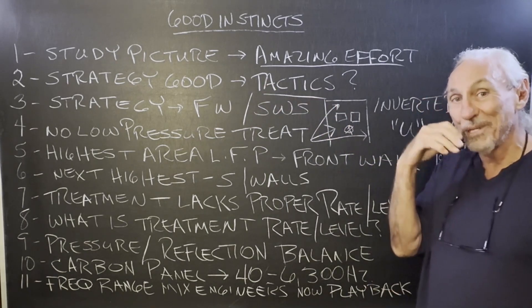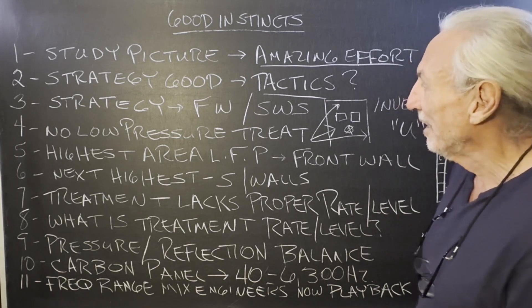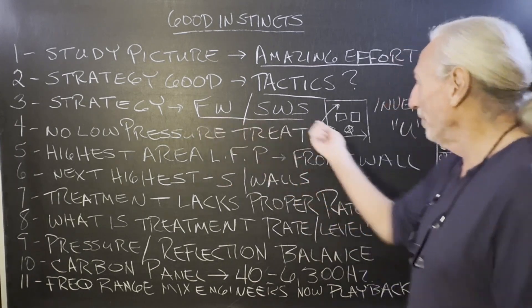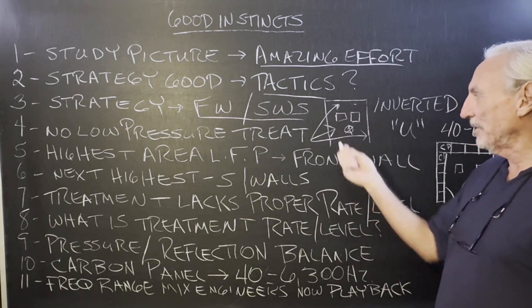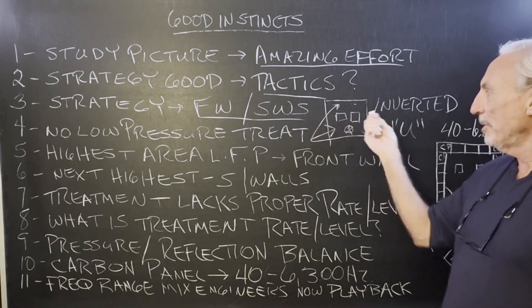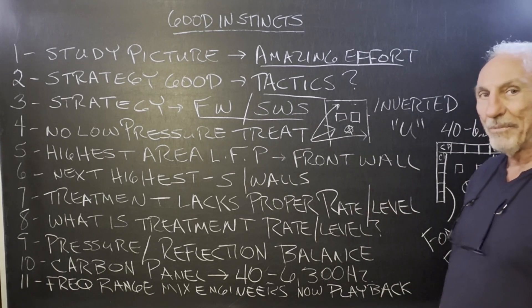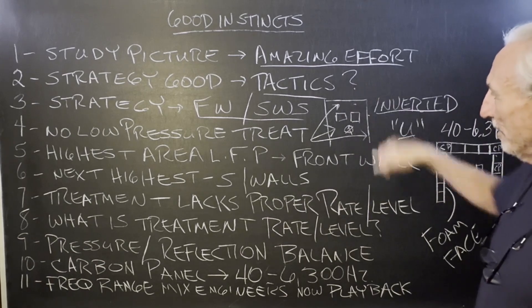Front wall, sidewalls. We know that the front wall is the area of highest pressure. Sidewalls are the next areas of higher pressure. But all three walls give us that reflection problem, so we call it the inverted U. That's what it is, treating the front and both sidewalls.